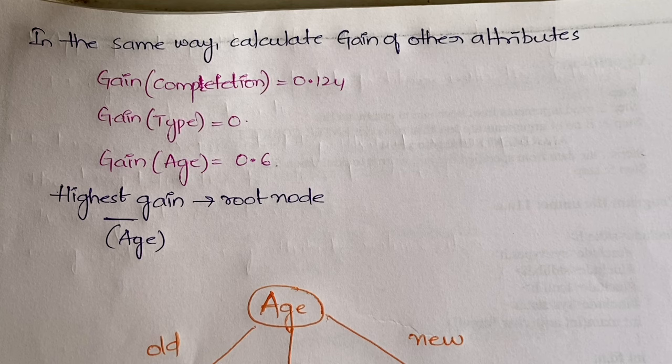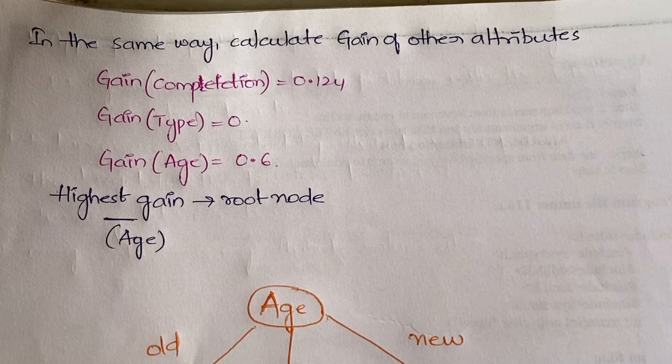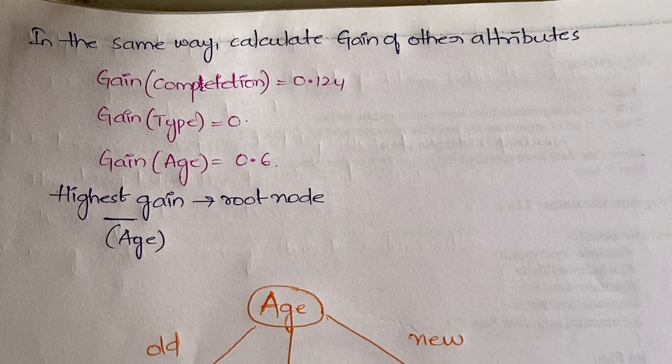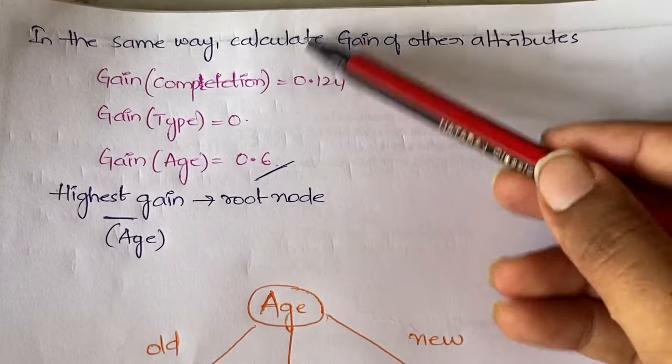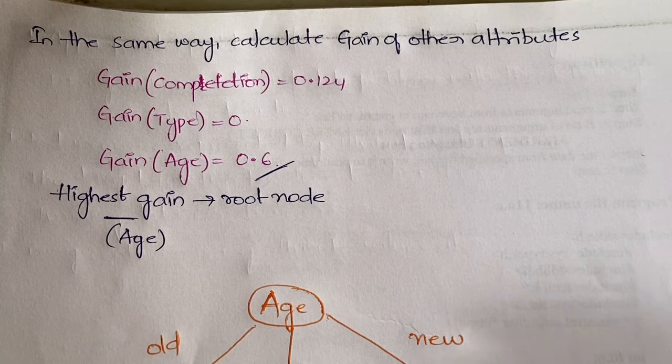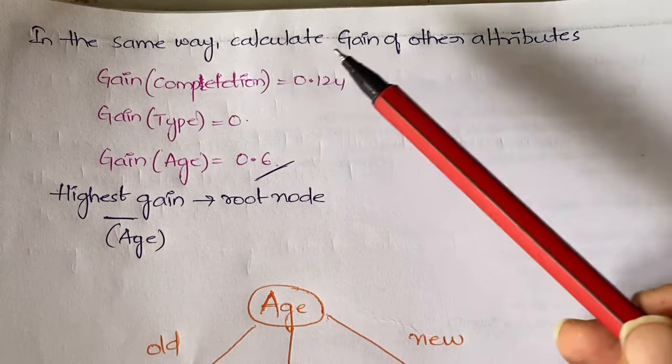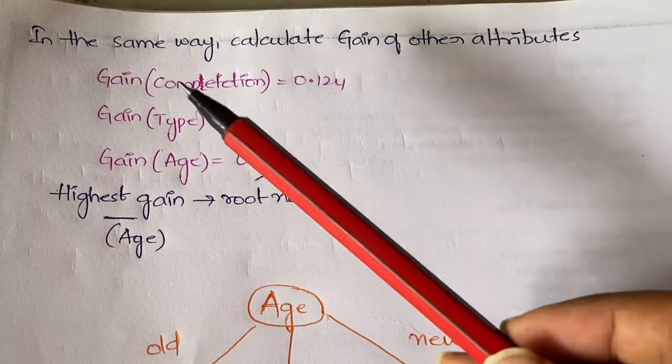Let me recap. I explained how to calculate the gain of the non-target attributes. In the previous video, we calculated it for age and got 0.6. For the remaining two, when you calculate, you will get gain of competition as 0.124 and gain of type as 0.